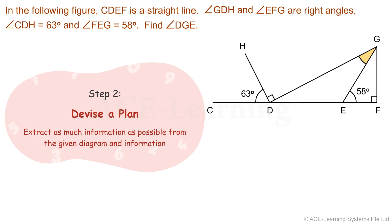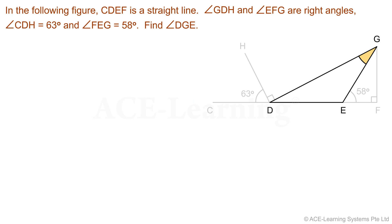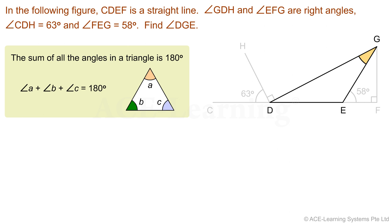Step 2: Devise a plan. Extract as much information as possible from the given diagram and information. Angle DGE is one of the angles of triangle DEG. To find angle DGE, recall the property: the sum of all angles in a triangle is 180 degrees. Angles EDG and DEG are the other two angles in triangle DEG.